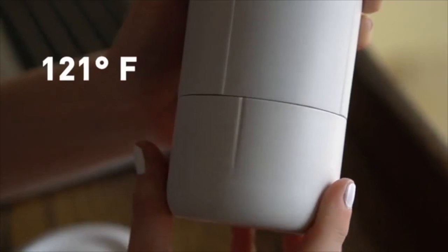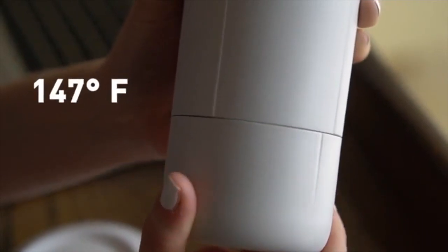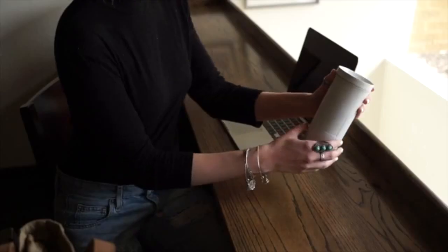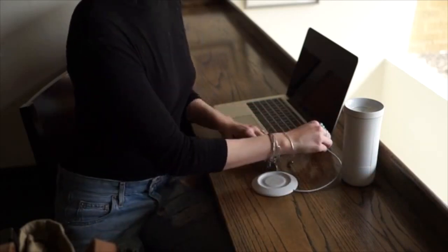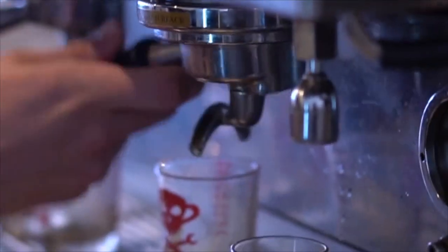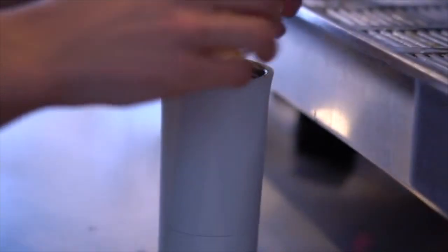Setting your favorite temperature is as easy as twisting the bottom. Pick a spot between 120 and 150 degrees. Once the temperature is set, plug the coaster into a USB port, fill up the Juul, and place on the coaster.